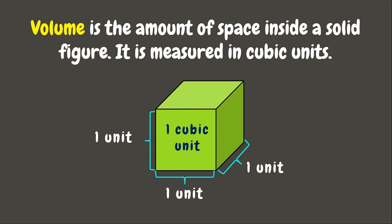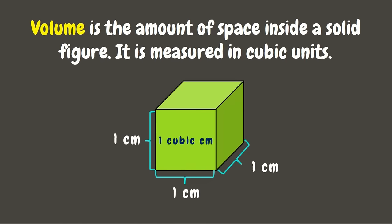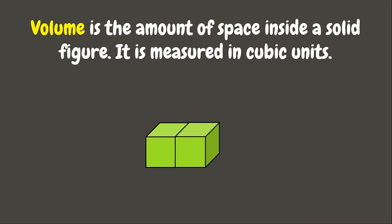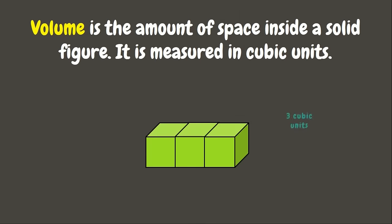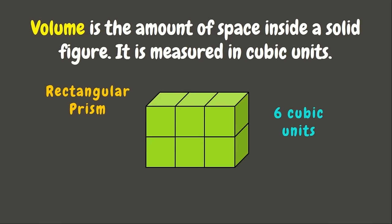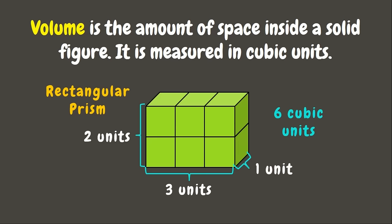A cubic unit is a cube whose sides measure one unit. If each side measures one centimeter, it will be called one cubic centimeter. If they are one meter, the volume would be one cubic meter. Now if we have two cubes whose sides measure one unit, the volume would be two cubic units. If we add one more, that will be three cubic units, and with three more, that will be six cubic units. Here we can see that we have formed a rectangular prism whose height measures two units, length three units, and width one unit. We can determine the volume of a figure by counting the number of cubic units that can fit inside it.